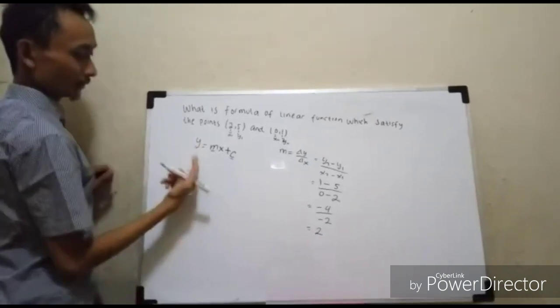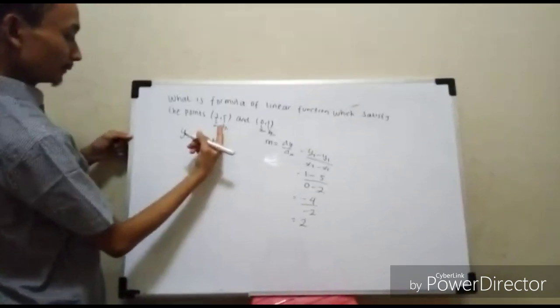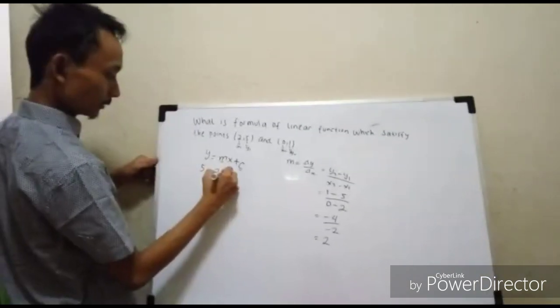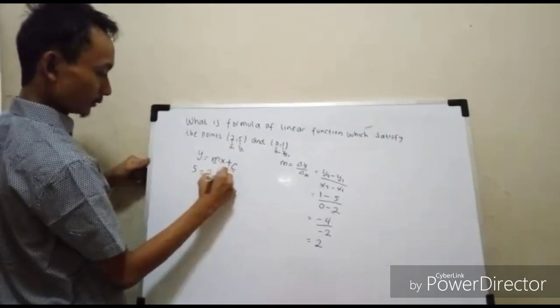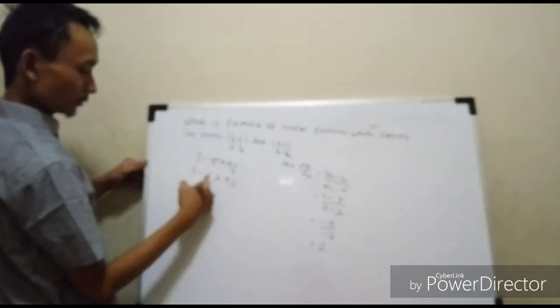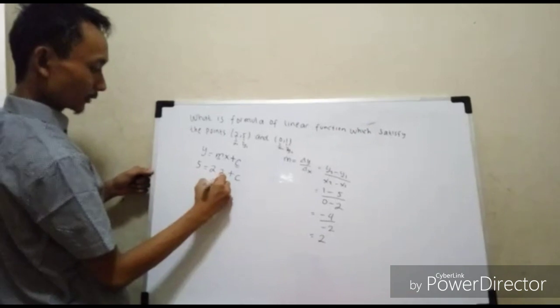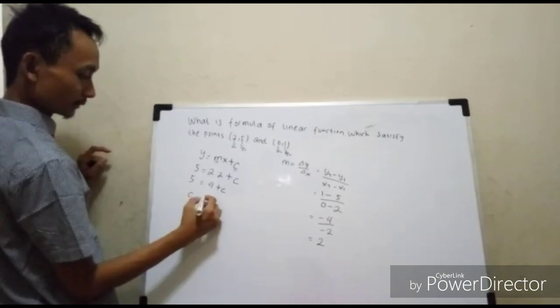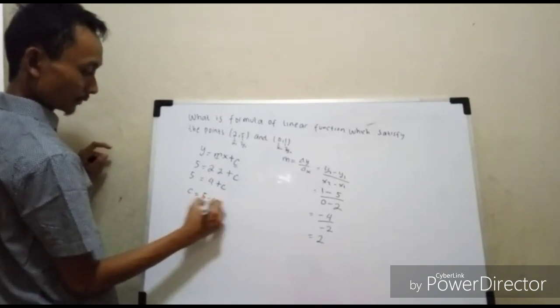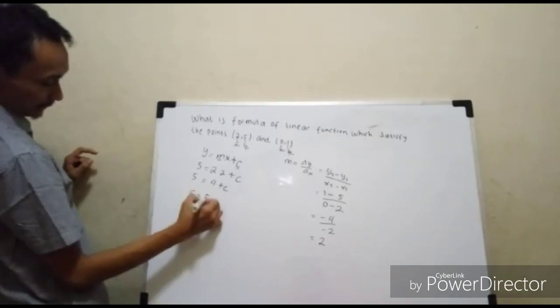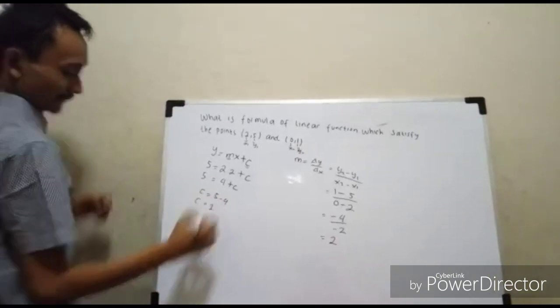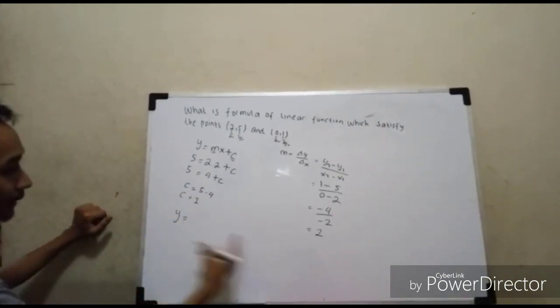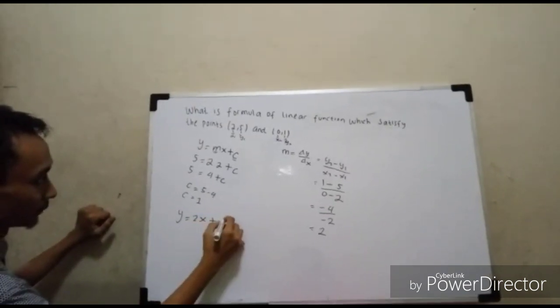So we substitute into the linear function. Y equals 5, M is 2, X is 2, plus C. So 5 equals 2 times 2 plus C. 4 plus C equals 5, and C equals 5 minus 4, so C is 1. Therefore, we know Y equals 2X plus 1.